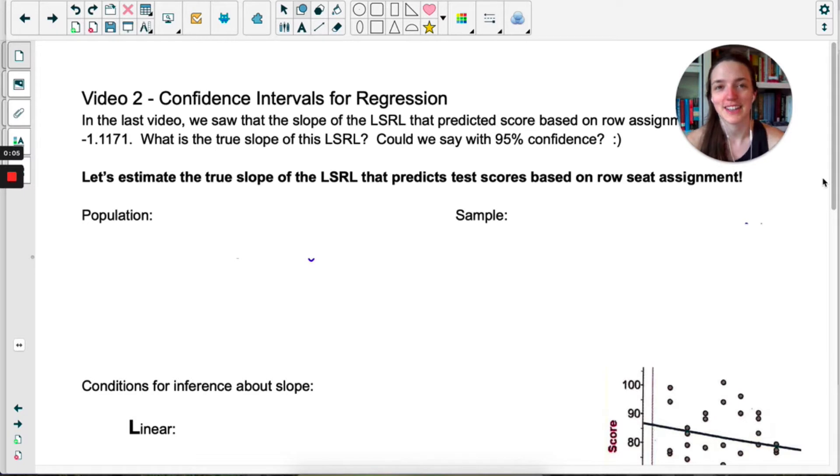In the last video we compared seat assignment to test scores. The slope was negative 1.1171, meaning if a student moved back one row their score fell by a little over a point. What do you think the true slope was? That was from a sample of 30 AP students. Could we say with 95% confidence what the true slope is? I bet we could! We're doing confidence intervals for slope.